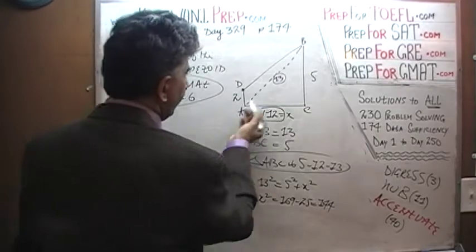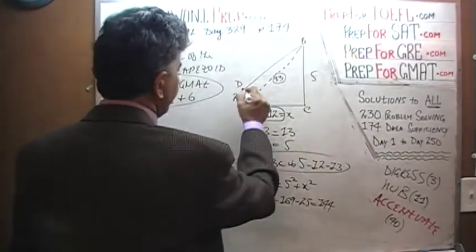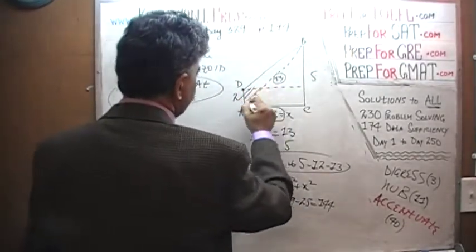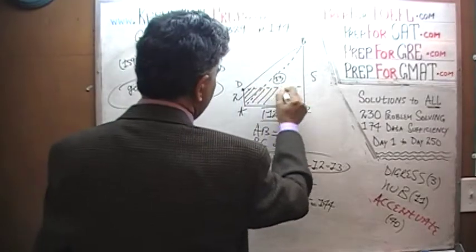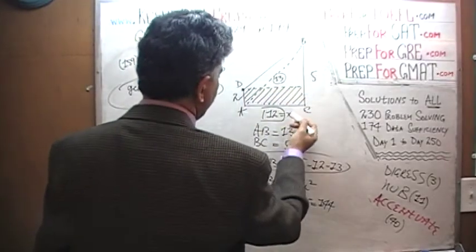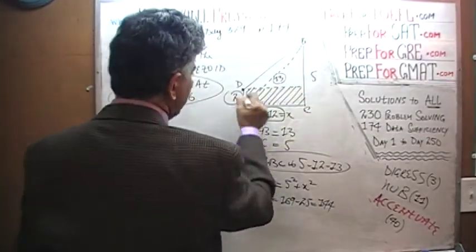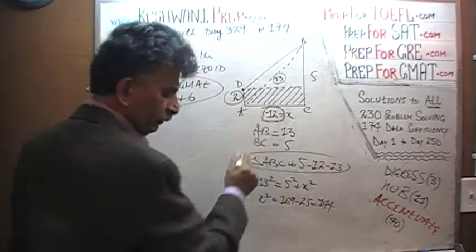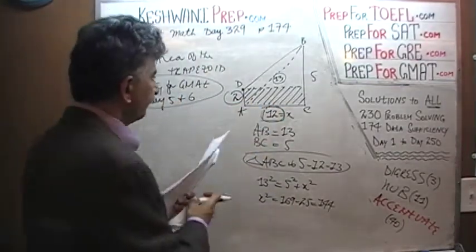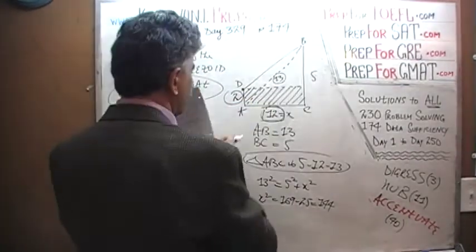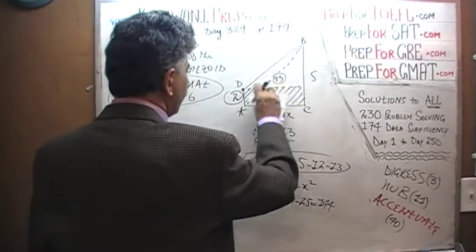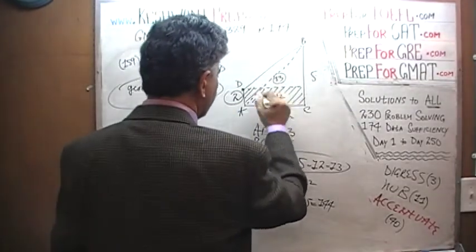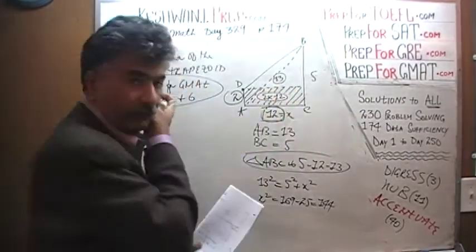So that part is done. This side is 13 and therefore the bottom is 12. Now let's break the trapezoid into two parts. We are going to have a bottom part which is a rectangle — this rectangle is simply 2 by 12. The area of the rectangle is 2 times 12, which is 24.